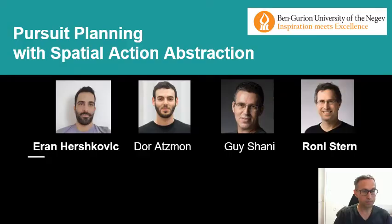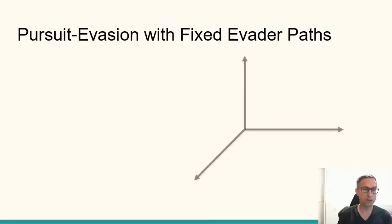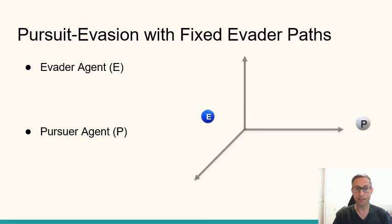So what is our problem? Our problem is a special case of the pursuit evasion problem. Pursuit evasion is a very well studied problem where you have an evader agent and a pursuer agent. The evader wants to evade, the pursuer wants to pursue the evader and catch it. This problem has many applications.